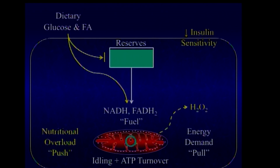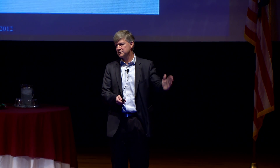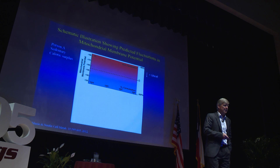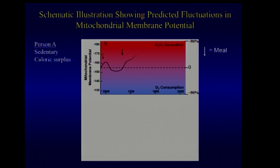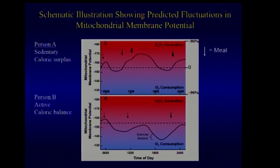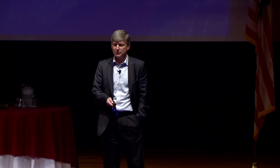Another way to view this: on the left y-axis is the mitochondrial membrane potential, and the dotted line is the membrane potential at which electrons will start to leak and H2O2 will start to be produced. A sedentary person that wakes up, has donuts, goes to work, sits in front of their computer, has a big lunch, goes back to their computer, goes home and eats dinner — they spend the entire day above the dotted line. You contrast that with a person in caloric balance who gets a little bit of exercise and activity during the day — they spend most of the day below the dotted line.